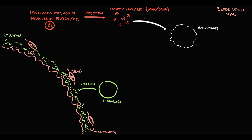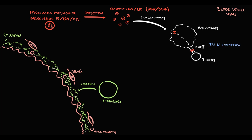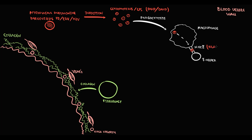macrophages consume these particles and then present parts of them on MHC-2 receptors to T-helpers. The logic is that antigen-presenting cells want to determine whether this particle is normal material or something pathogenic. T-helpers scan the particle, and in normal conditions they recognize it as a normal substance and do not trigger inflammation. However, some people have MHC-2 receptors produced based on the HLA-DRB1 allele, and in this case inflammation will most probably develop.